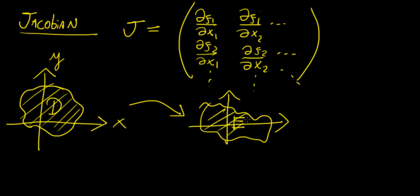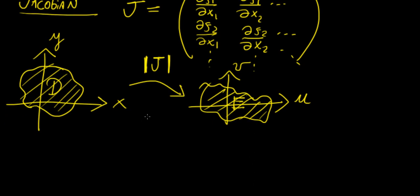If you transform the region, the shape of the region is going to change accordingly and adapt to the new set of coordinates — let's call these u and v. This is just a two-dimensional example, but it can be extended to any number of variables or dimensions. Basically, the Jacobian — the determinant of this particular matrix — is going to tell you the quantity you need in order to perform that integration given that change of variables.